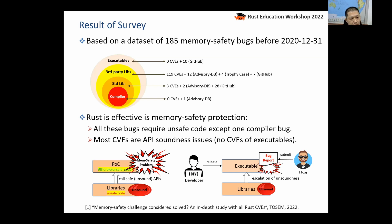Bug reporters can write proof-of-concept examples calling these unsound safe APIs, and without using any unsafe code themselves, they can trigger memory safety problems. All these bugs are API soundness issues — they are mild issues. Unless these soundness issues propagate and escalate to some execution mode, they will not lead to security consequences. In practice, I find no such bug reports, which is the second piece of evidence that convinced me Rust is really effective.